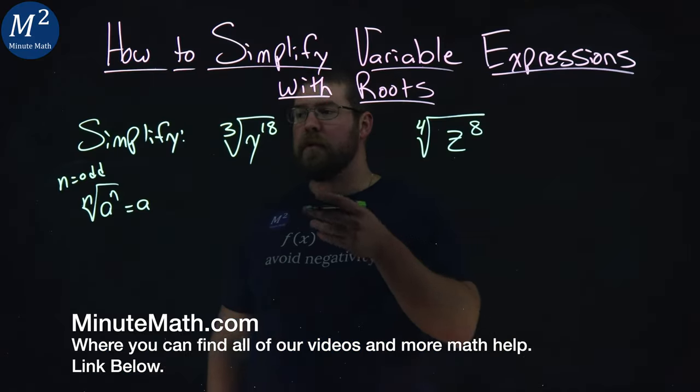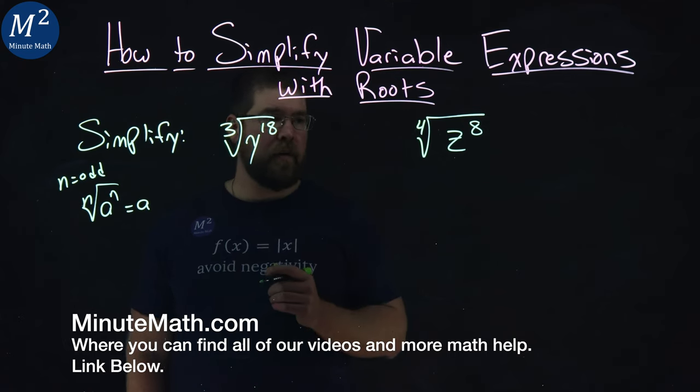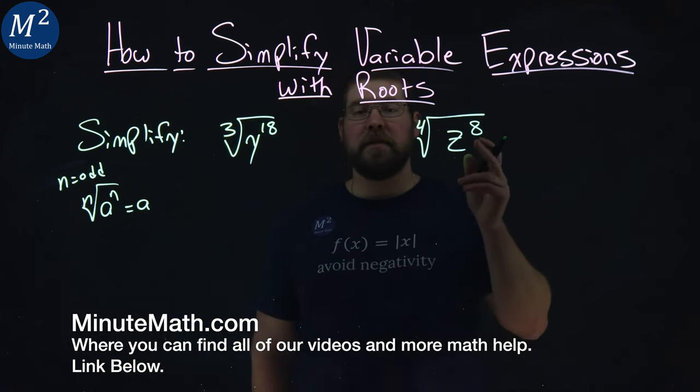We're given two problems here. Simplify the third root of y to the 18th power, and the fourth root of z to the 8th power.